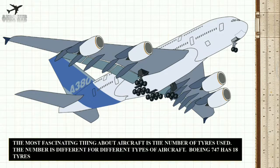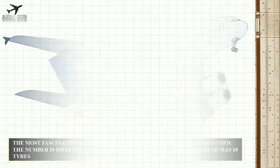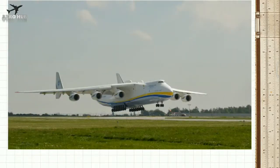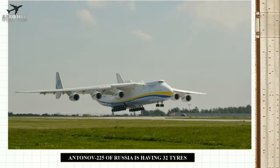The most fascinating thing about aircraft is the number of tires used. The number is different for different types of aircraft. Boeing 747 has 18 tires, and the Antonov 225, an aircraft operated by Russia, has 32 tires.